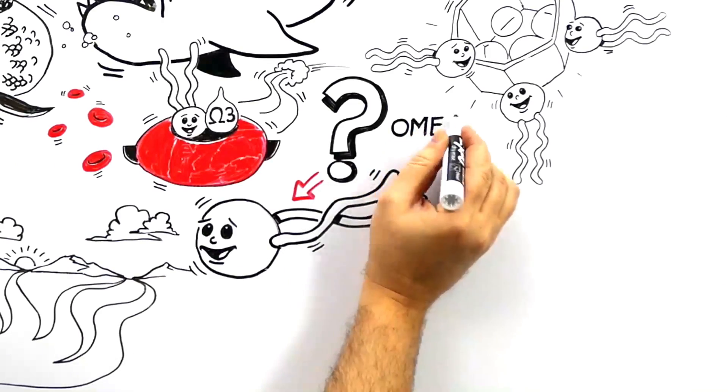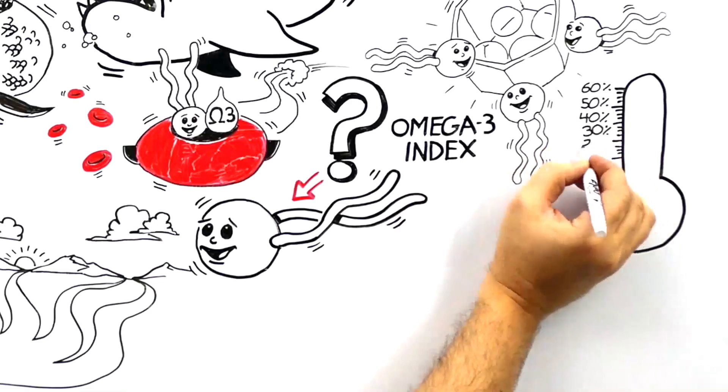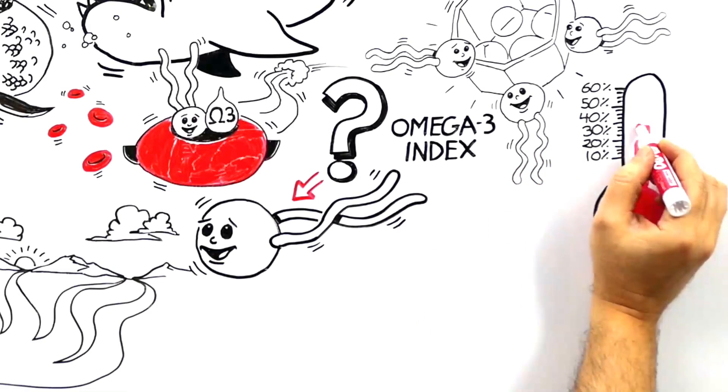By using something called the Omega-3 Index, you can measure the percentage of EPA and DHA in the red blood cell fatty acids.